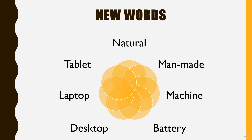Ok students, first of all we will do some new words of lesson 1. First word is Natural. Natural means things made by nature. Spelling: N-A-T-U-R-A-L, Natural. Next is Man-made. Man-made means things made by man. Spelling: M-A-N-M-A-D-E, Man-made.